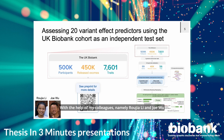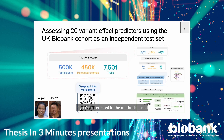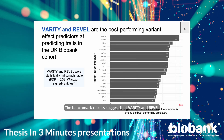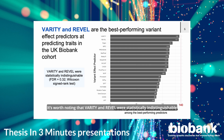With the help of my colleagues Roger Lee and Joe Wu, I assessed 20 variant effect predictors using the UK Biobank cohort as an independent test set. Please refer to the preprint by scanning the QR code for methods details. The benchmark results suggest that Varity and REVEL are the best-performing variant effect predictors at predicting traits in the UK Biobank cohort. It is worth noting that Varity and REVEL were statistically indistinguishable, and thus both considered the best-performing predictors.